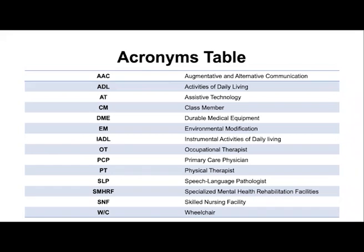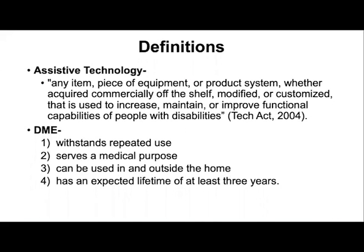Please go over this acronym table if you have any questions throughout this presentation. Before we start, let's go over two key definitions. Assistive technology is typically defined as any type of item, piece of equipment, or product system, whether acquired commercially or customized, used to increase, maintain, or improve the functional capabilities of people with disabilities. There's also durable medical equipment, known as DME, which is equipment that can withstand repeated use, serve a medical purpose, be used in and out of the home, and has an expected lifetime of at least three years.